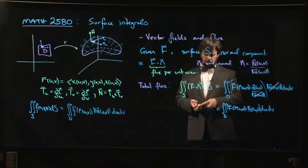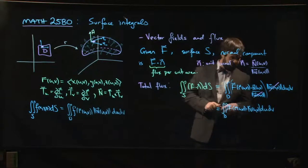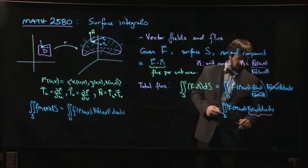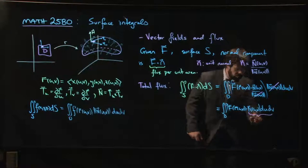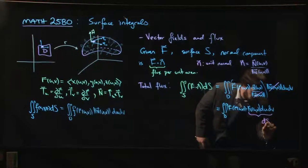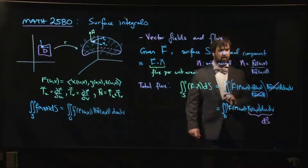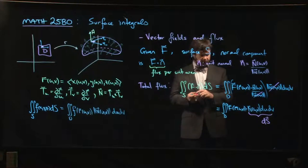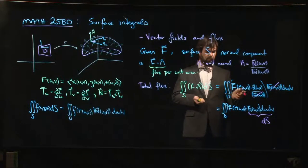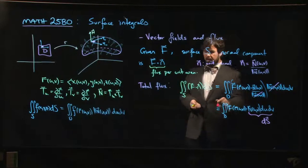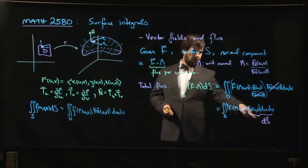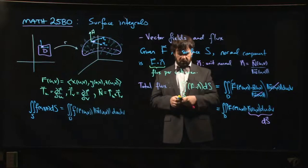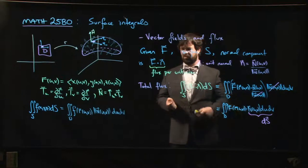This combination of normal vector times du dv is often referred to as the vector dS. Just like we had the dr vector for line integrals, we'll write dS with the vector over top. When you see the arrow or little hat on top, that's different from this ds, which is a surface area element—this is almost like a flux element.